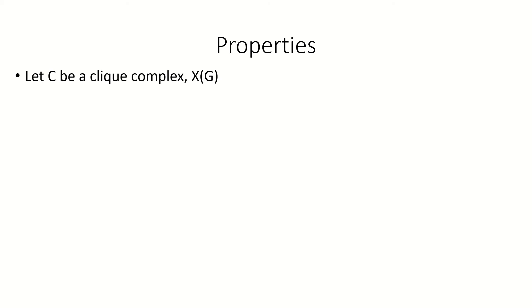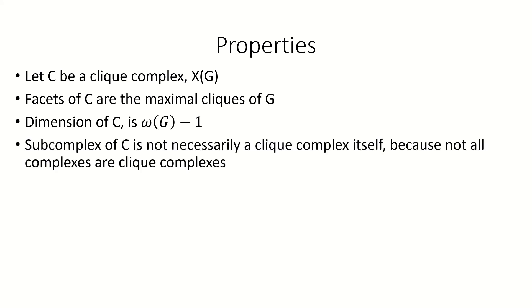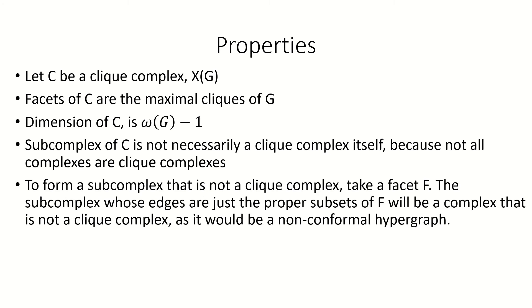Moving on, let's look at some of the characteristics of clique complexes. The facets of a clique complex C of a graph G are the maximal cliques of G, and the dimension of C will be one less than the clique number of G. A subcomplex of C will not necessarily be a clique complex, as we discussed before that not all complexes are clique complexes. All that's necessary is to form a subcomplex from just the faces of a facet, not including the facet itself. The result is a subcomplex of C, but it cannot be the clique complex of a graph because it's not a conformal hypergraph — it's missing a maximal clique of its two-section as an edge.